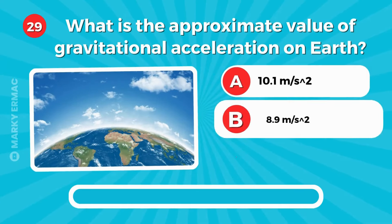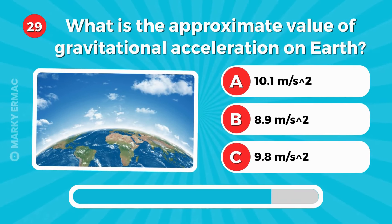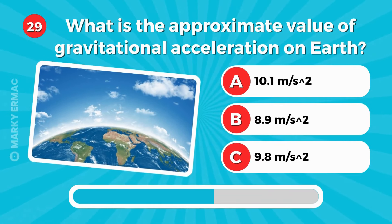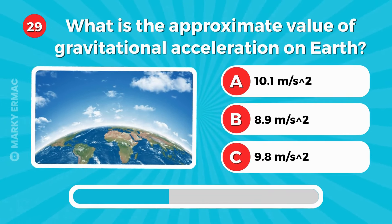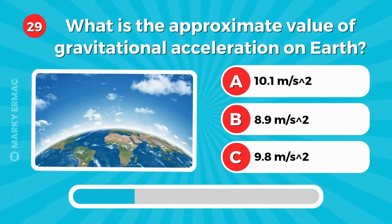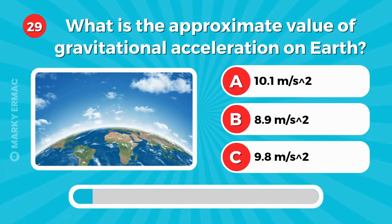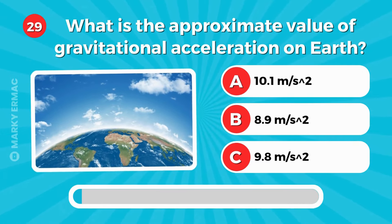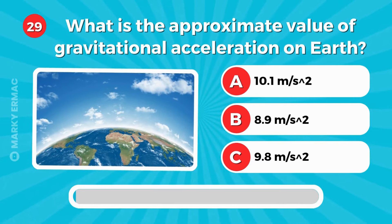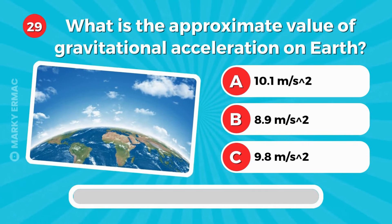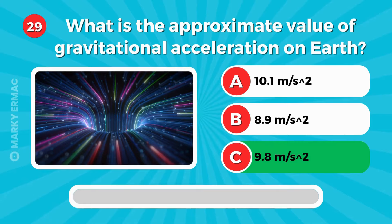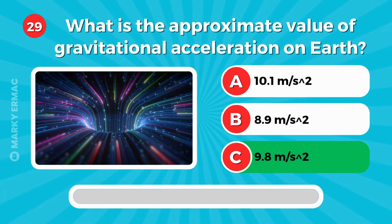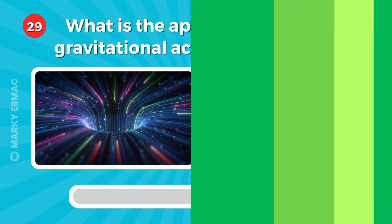What is the approximate value of gravitational acceleration on Earth? Correct answer is letter C.